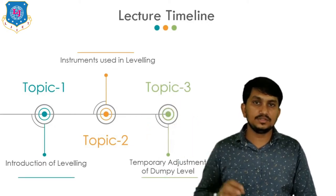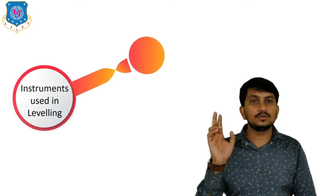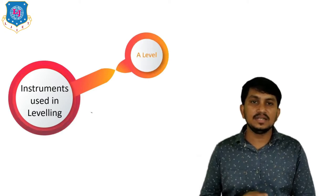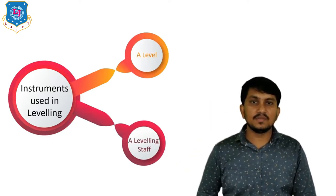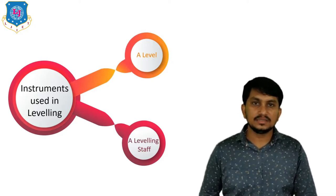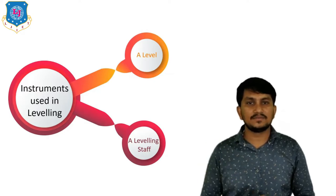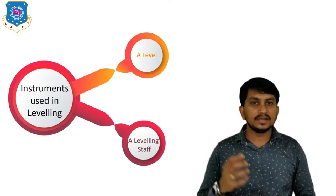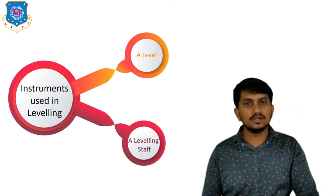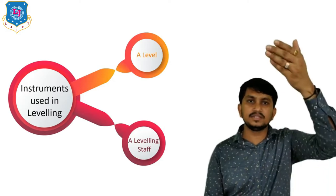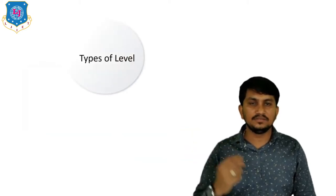Now let's move to the various instruments used in leveling. Mainly there are two instruments: first is a level and second is a leveling staff. The level is the instrument used to measure the relative height of different points. A leveling staff has graduations starting from zero at the ground up to three meters.